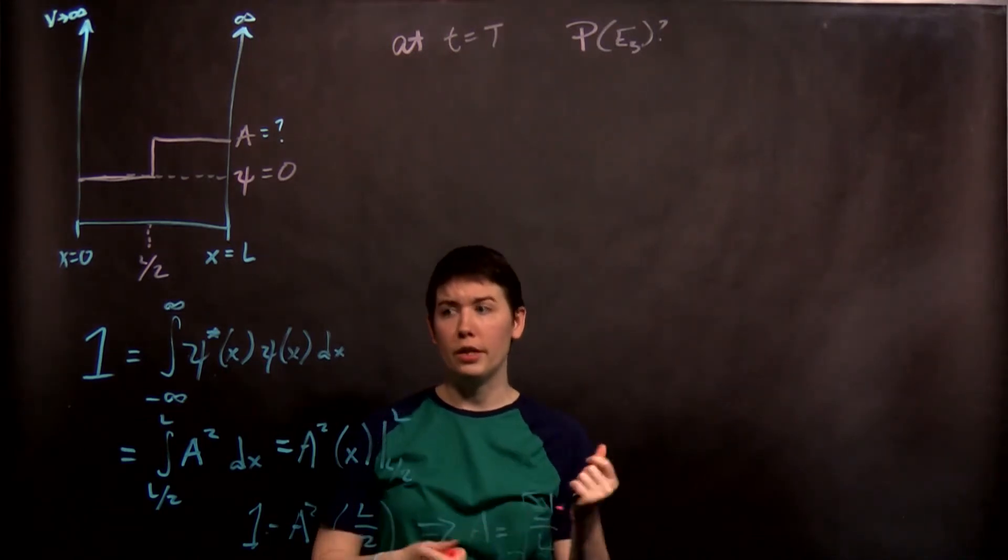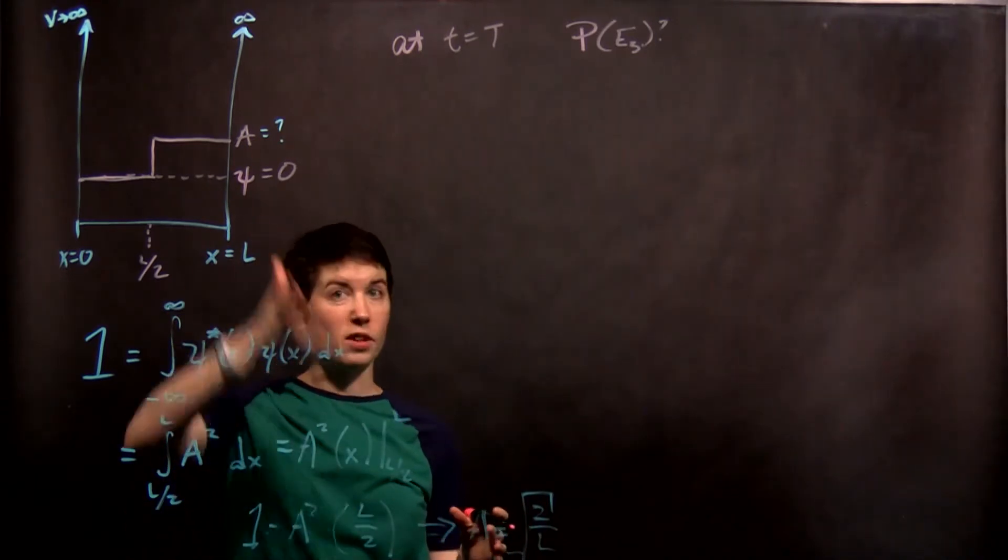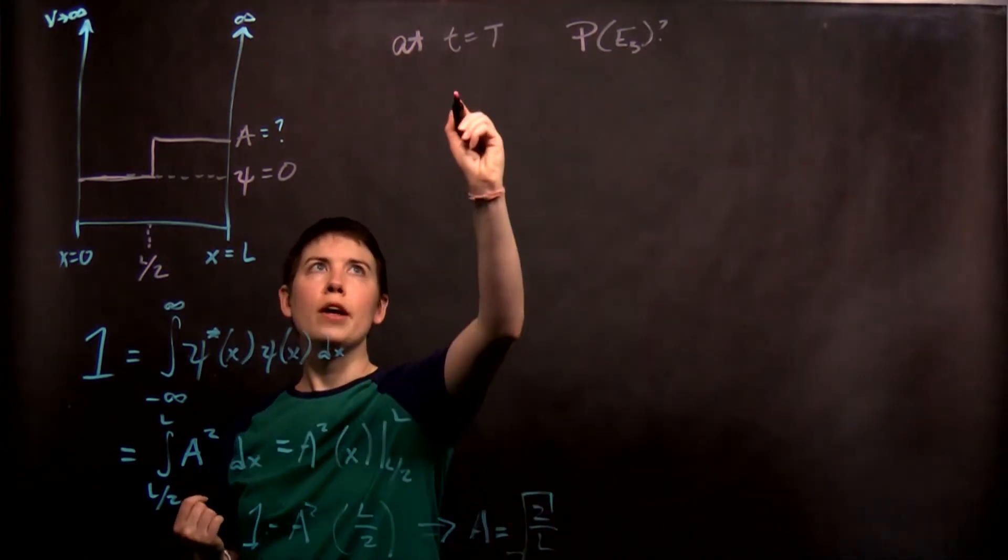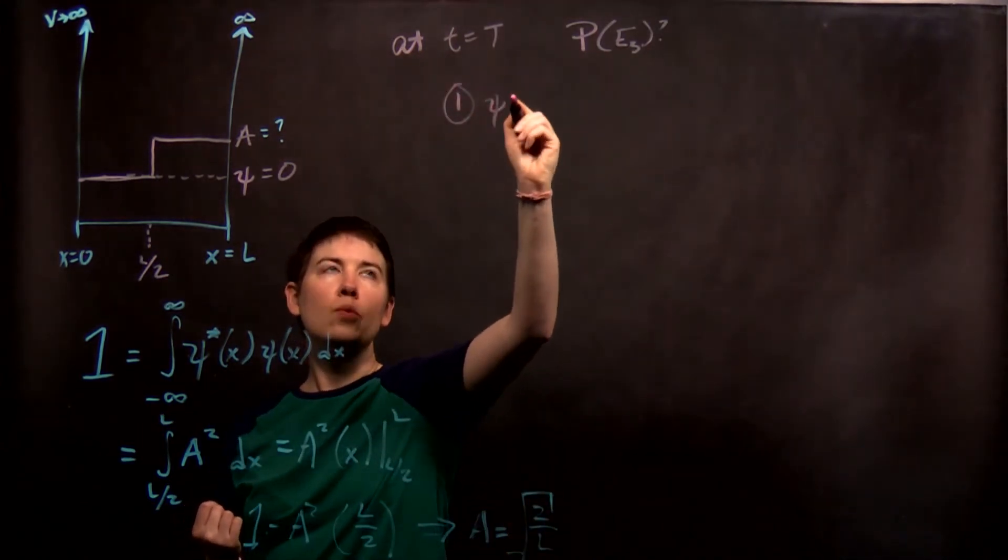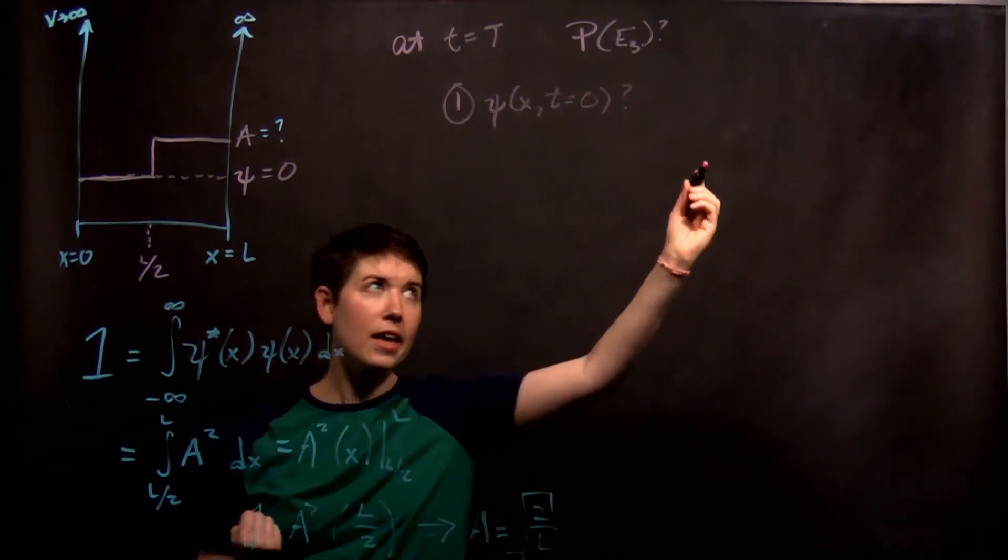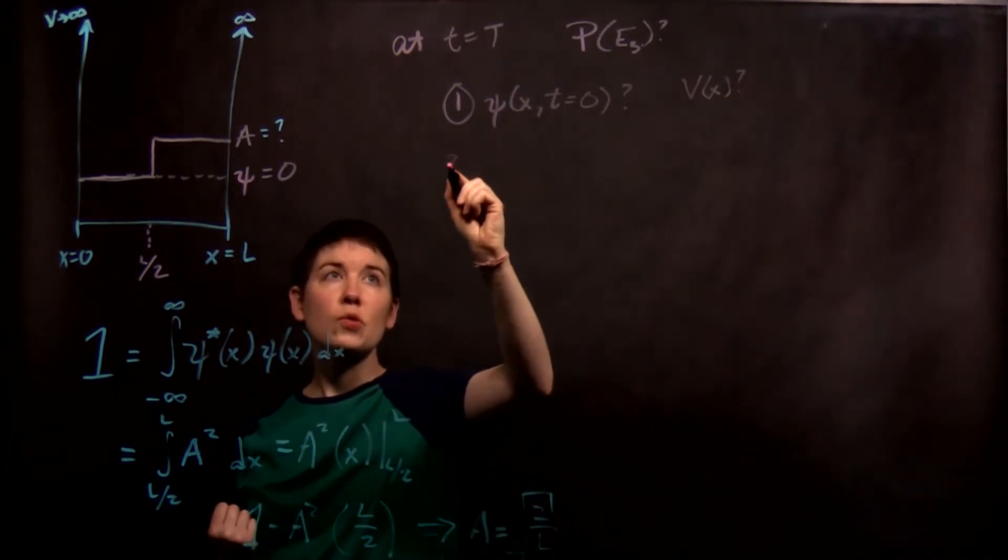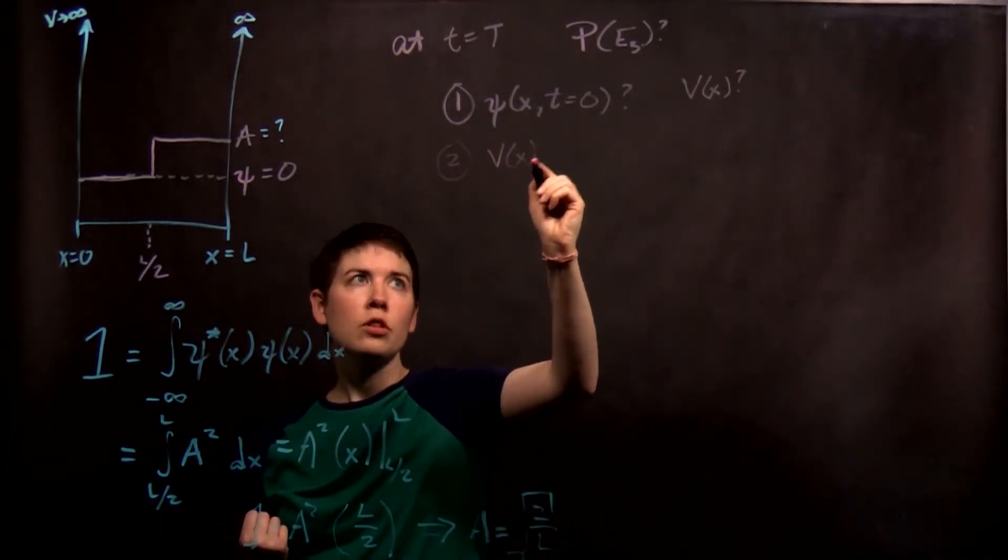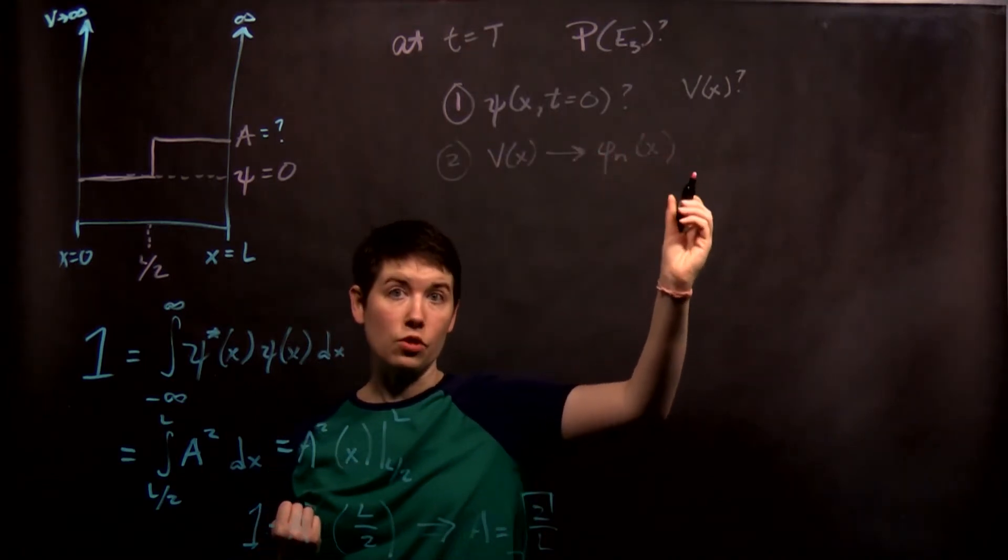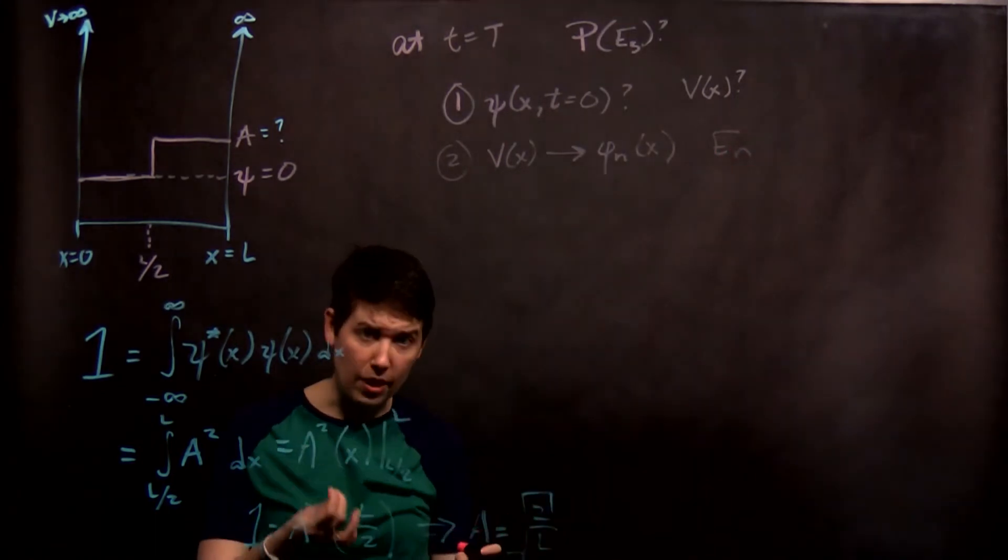So what do we have to do here? Right? So step one, we find what our wave function is. In this case, you weren't told the functional form. You had to find it and you had to normalize it. Right? So step one is what is psi of x at t equals zero. And part of that is what is your potential. Make sure you know what this is. So step two is use your potential to figure out what your energy eigenfunctions are, those energy eigenstates, and your energy eigenvalues.